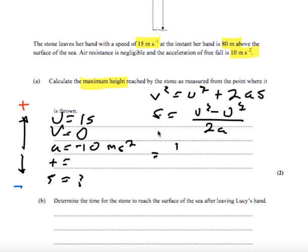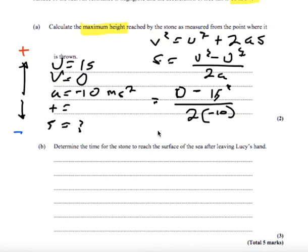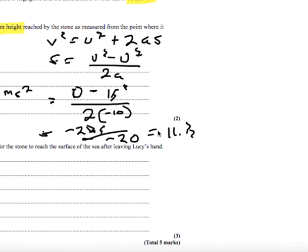U squared is 15. Oh no excuse me v is zero. Take u squared which is 15 divided by 2a. This gives me negative 225 on negative 20 or 11.25 that rounds to 11.3 and we're working in SI units so that's going to be meters.